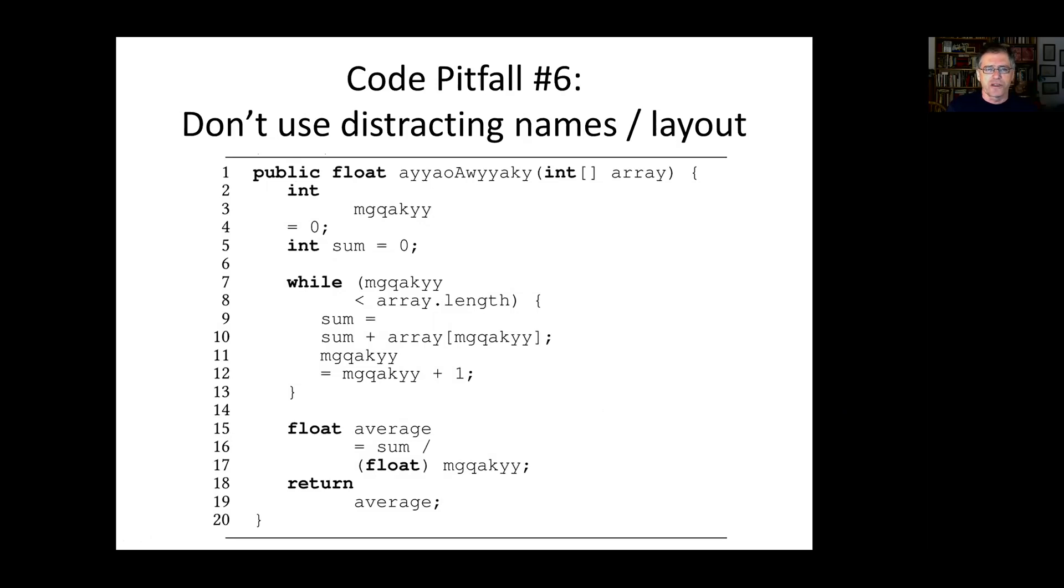Another problem is using distracting names or layout. For example, this function is called ayaoyaki. And in it there's a variable called megkaki. And also look at the layout. The type is here, the variable name is here, the initialization is here. So when you experiment with subjects reading this code, they're not really trying to understand it. They're trying to figure out what the hell is going on and why does it look so strange. This is probably not what you conducted an experiment for.